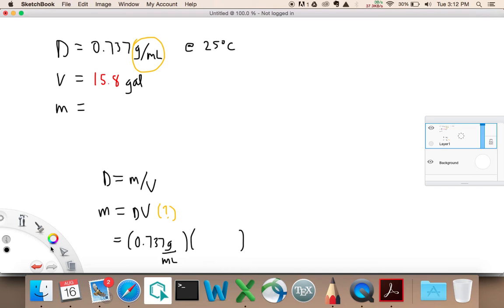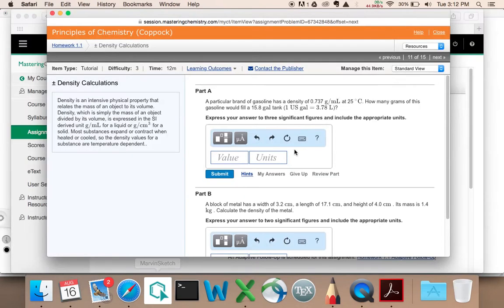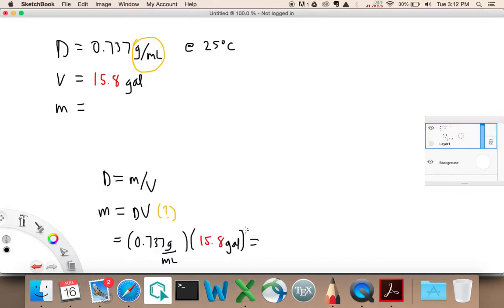So the density is 0.737 grams per mL, and the volume is, I'm going to do it in red again, 15.8 gallons. Okay, so the challenge that we have here is that these units don't all cancel out. I'm not going to end up with grams. I think the question was, so let's look back at the question. How many grams, right? So what is the mass in grams? That's the question. And so I want my answer to be in grams, but my gallons and my mils don't cross each other off.